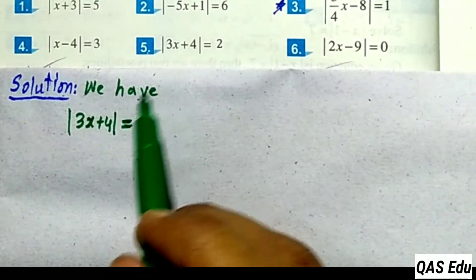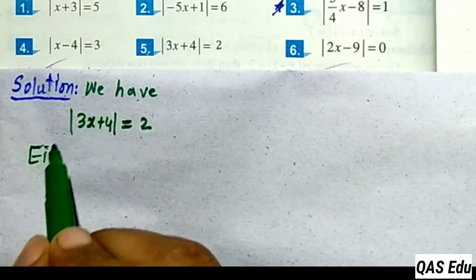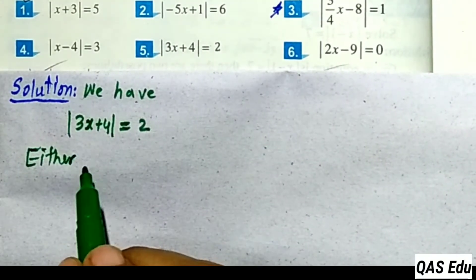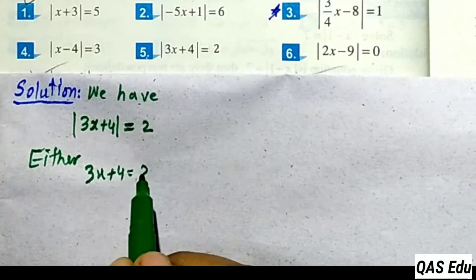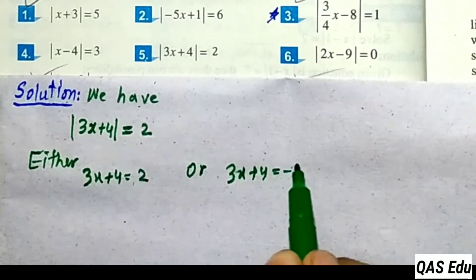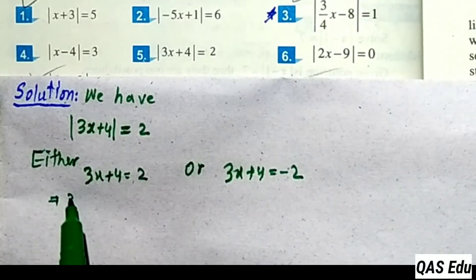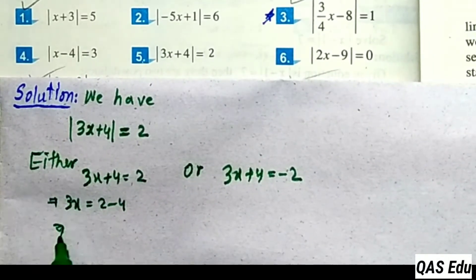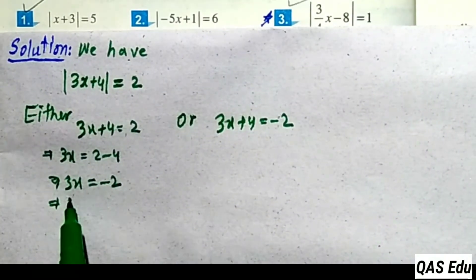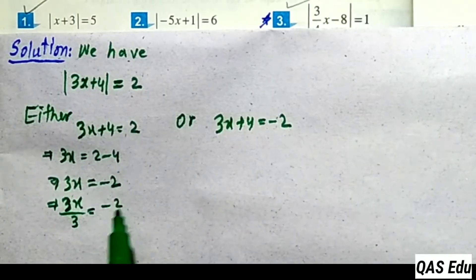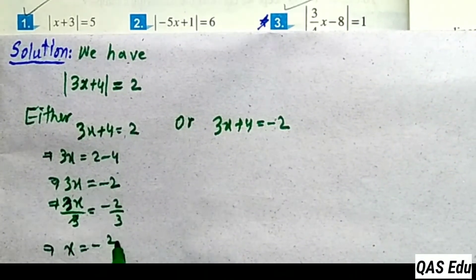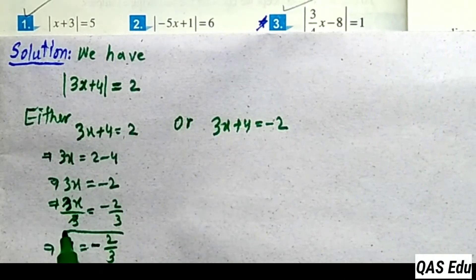Question 5: absolute value of a number gives two results. Either 3x plus 4 equals plus 2, or 3x plus 4 equals minus 2. Move plus 4 to the right as minus 4: 2 minus 4 gives minus 2. Dividing both sides by 3, the 3s cancel giving x equals minus 2 over 3.